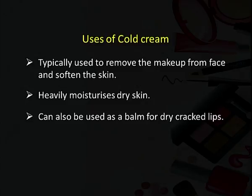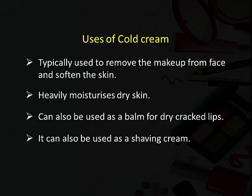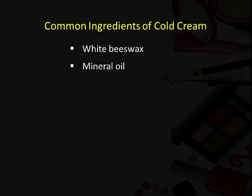If lipstick is not used, cold cream can also be used to cover the lips. It can also be used as a shaving cream. The main ingredient is white beeswax — white meaning the beeswax is purified. Then mineral oils, water, borax, and perfume are the basic ingredients in a cold cream. Olive oil or almond oil, which were used as ingredients earlier, are not used now because they go rancid quickly, so mineral oil is used these days.